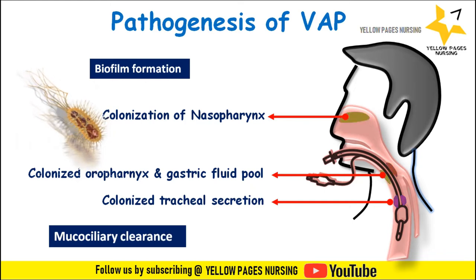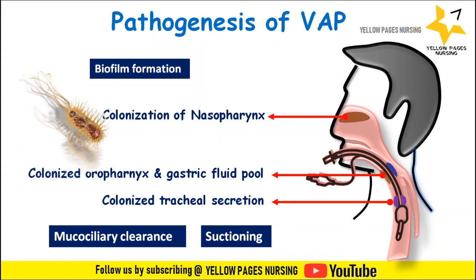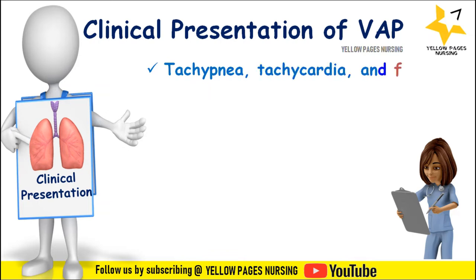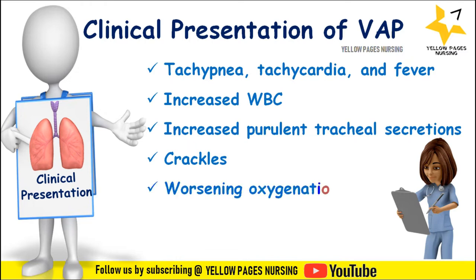The clinical presentation of ventilator-associated pneumonia includes tachypnea, tachycardia, fever above 100 degrees Fahrenheit, increased WBC count, increased purulent tracheal secretions, crackles in the lungs, worsening oxygenation, hypoxemia, and changes in PF ratio.